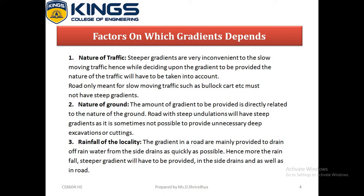Roads meant only for slow-moving traffic vehicles such as bullock carts must not have a steep gradient. The second factor is nature of ground. The amount of gradient to be provided is directly related to the nature of the ground. Roads with steep undulation will have steep gradients, as it is sometimes not possible to provide unnecessary deep excavations or cuttings.